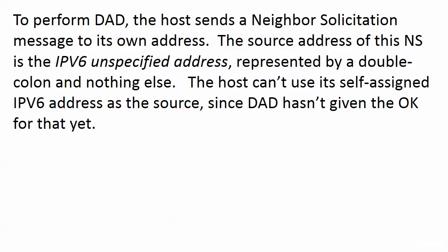To perform DAD, the host sends out a Neighbor Solicitation message. The destination of that NS is the address it just gave itself — it's trying to talk to itself, sending a message destined for the address it wants to use, but that address isn't in use yet. The source address of that NS is the IPv6 unspecified address, represented by a double colon — literally 128 zeros — because the host can't use its self-assigned address yet as the source since DAD hasn't approved it.